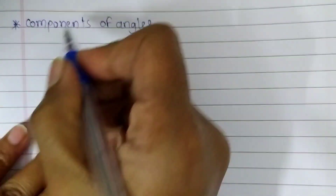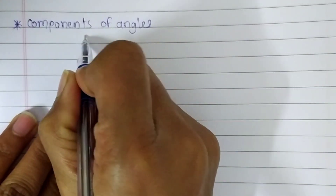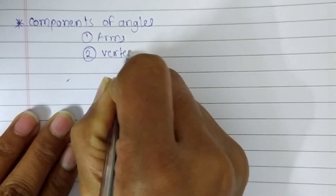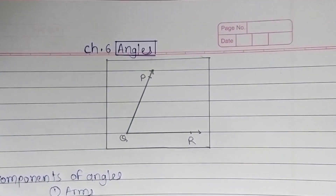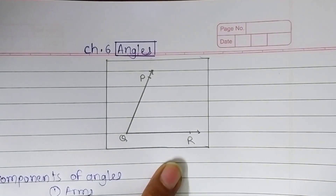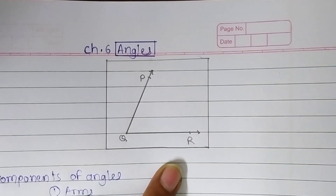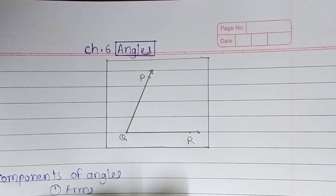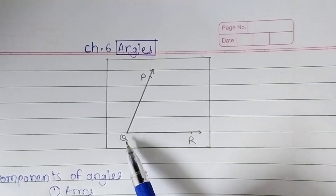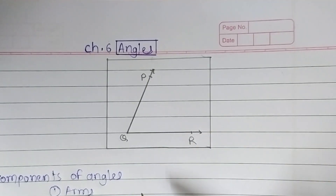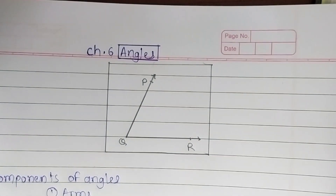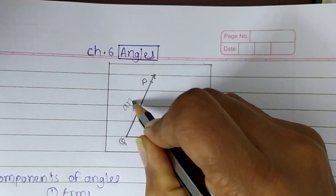Components of angles. There are two components of angles. The first is arms, and the second one is vertex. Now look at the figure here. We can see there is an angle. In this angle, we notice that it has two lines — line QR and line QV — and there is a common point between the two lines. These two lines are known as the arms of an angle.